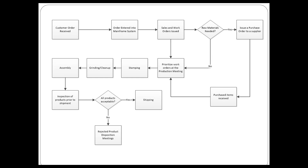Are we to conclude that all 12 of these boxes represent a full process? Let's look at some of what we've got here. We have, for example, a step called 'order entered into mainframe system' — is that a full process by itself? We have 'inspection of products prior to shipment' — is that a full process unto itself? And 'prioritize work orders at the production meeting' — same question. The answer is possibly, but not definitely.